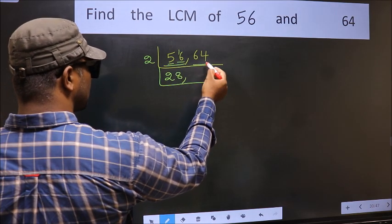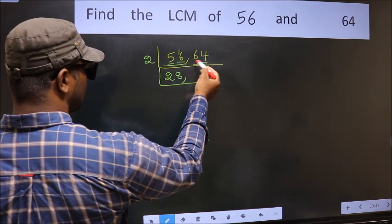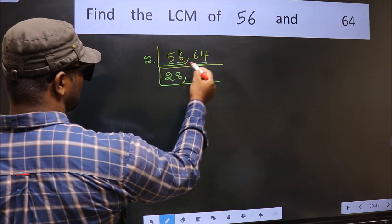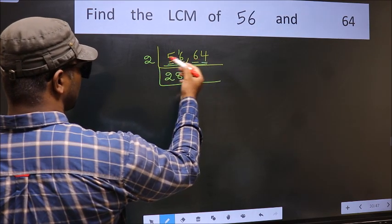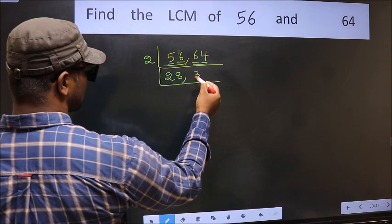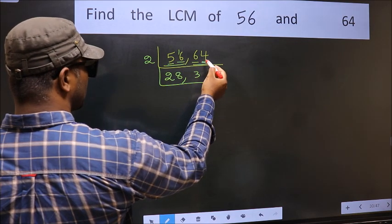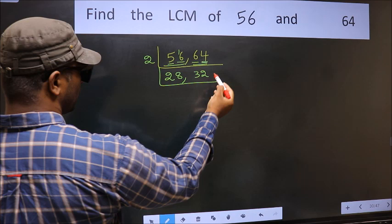The other number 64. Last digit 4, even, so this is divisible by 2. First number 6. When do we get 6 in 2 table? 2 times 3 is 6. The other number 4. When do we get 4 in 2 table? 2 times 2 is 4.